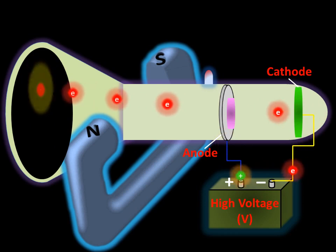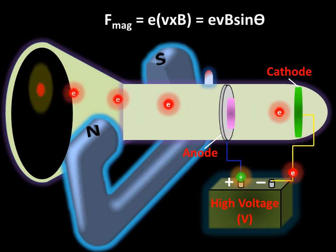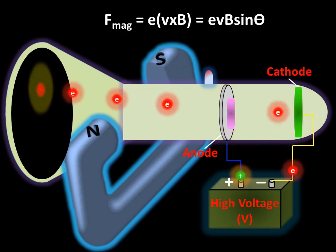To further confirm the nature of cathode rays, Thomson placed two magnets on either side of the cathode ray tube. He observed that the cathode rays interacted with the magnetic field and deflected toward the south pole of the magnet. This was another indication that these cathode ray particles are negatively charged.